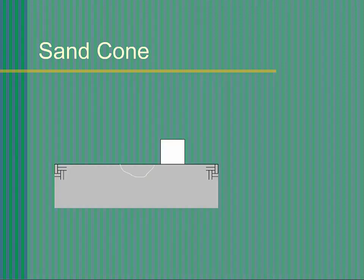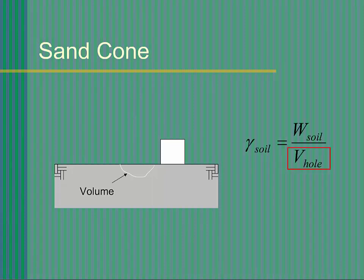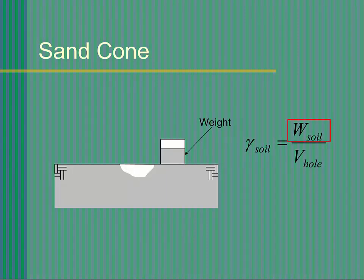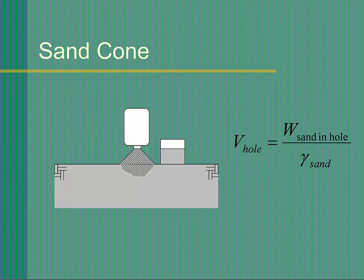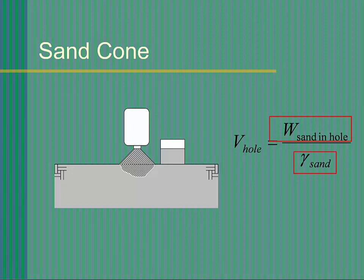Before covering each part of the test, let's have a quick overview of the test method. In order to compute the unit weight, we must measure both the volume and weight of a sample of the in-situ soil. In the Sandcone test, we do this by digging a small hole in the ground and collecting all the soil that comes out of the hole. We can then weigh this soil. To determine the volume, we fill the hole with a special calibrated sand. This sand is very uniform and dry — it will flow easily into the hole and fill it up. Most importantly, we will have already determined the unit weight of this sand.